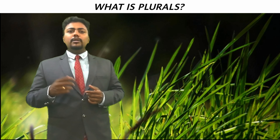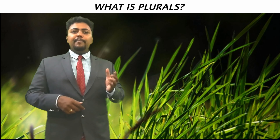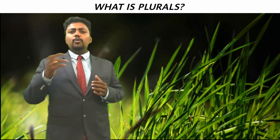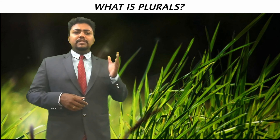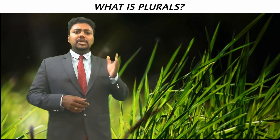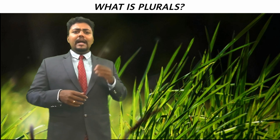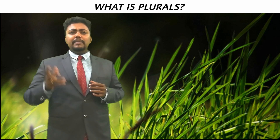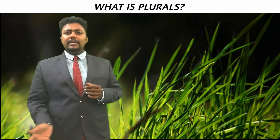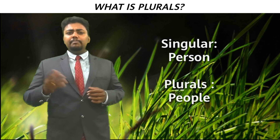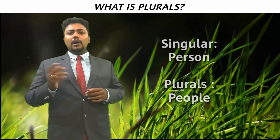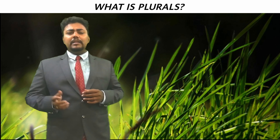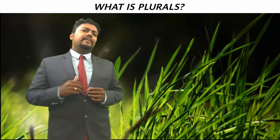Some nouns are the same in both singular and plural forms: fish, sheep, and deer. And some nouns change their letters entirely or take irregular forms: person becomes people, ox becomes oxen, child becomes children, goose becomes geese, foot becomes feet.